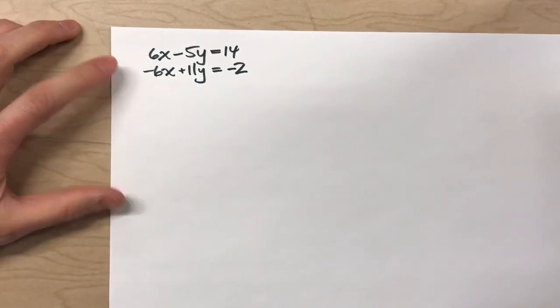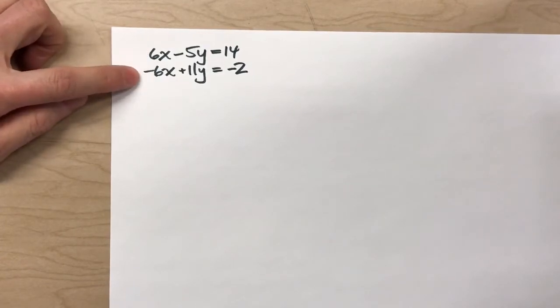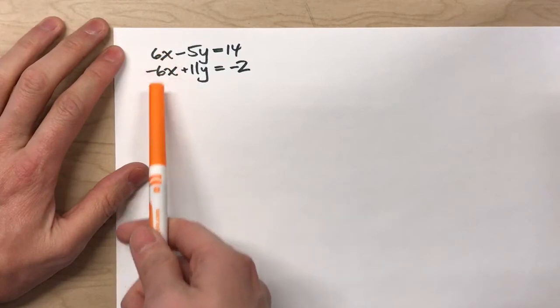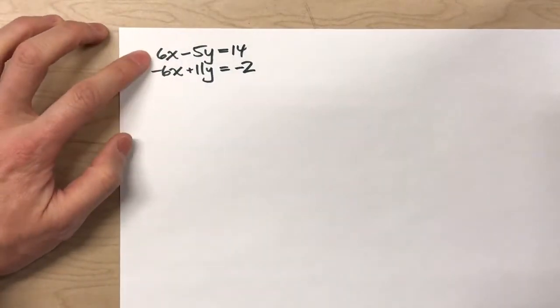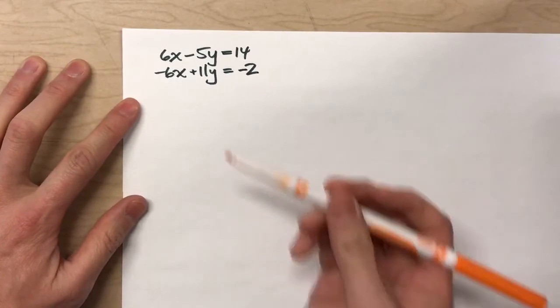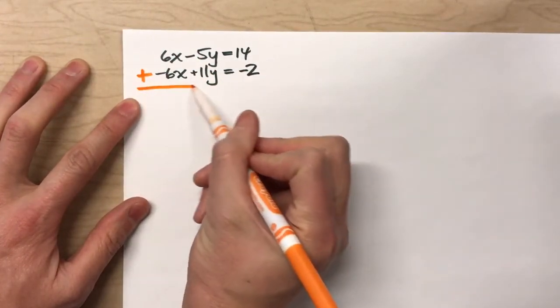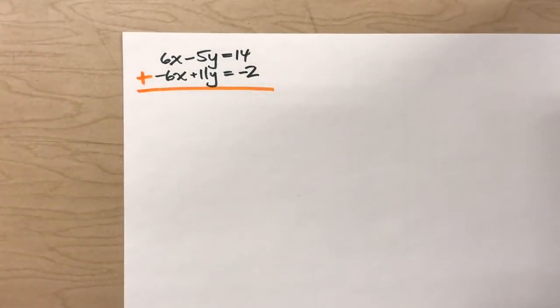Now, this new method only works because the first equation has a 6x, the second equation has a negative 6x. They have the same number of x's, but one's positive and one's negative. So, what I'm going to do is, I'm going to take the two equations, and I'm actually going to add the two equations together.